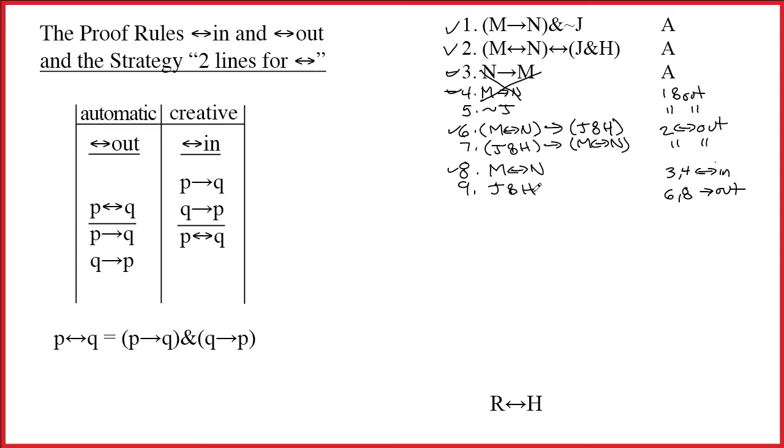Oh, look! I have J and H. Well, notice though what would happen if I did the arrow out. I would get M double-arrow N again. So, there's really no reason to work on 7.